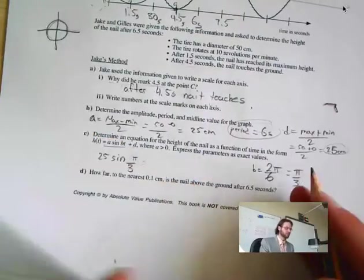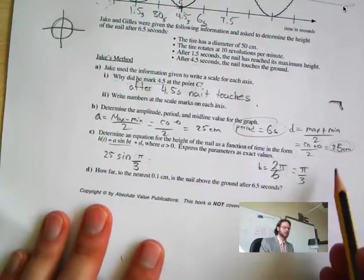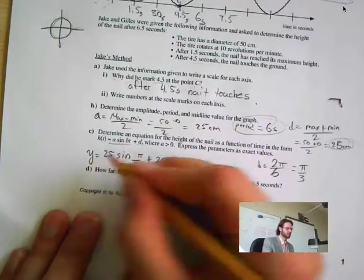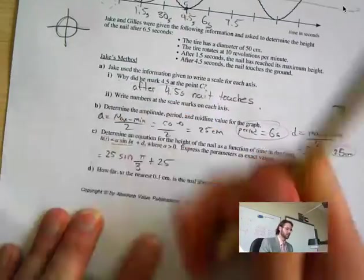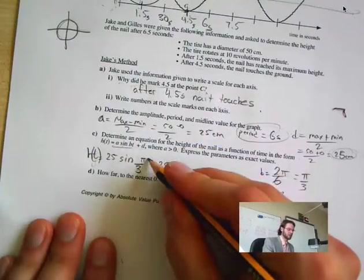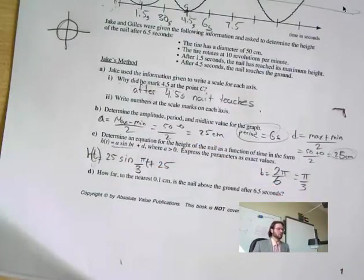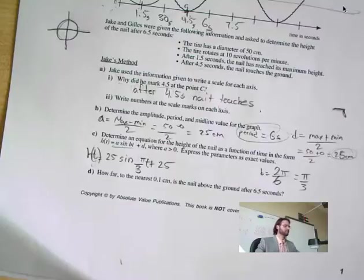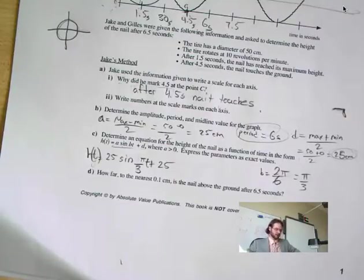We also need to add D, which is 25 plus 25, because that's my midline. It wants it in terms of h of t, and this is t as in time. How far to the nearest 0.1 centimeters is the nail above the ground after 6.5 seconds? To do this, I have to use my graphing calculator.